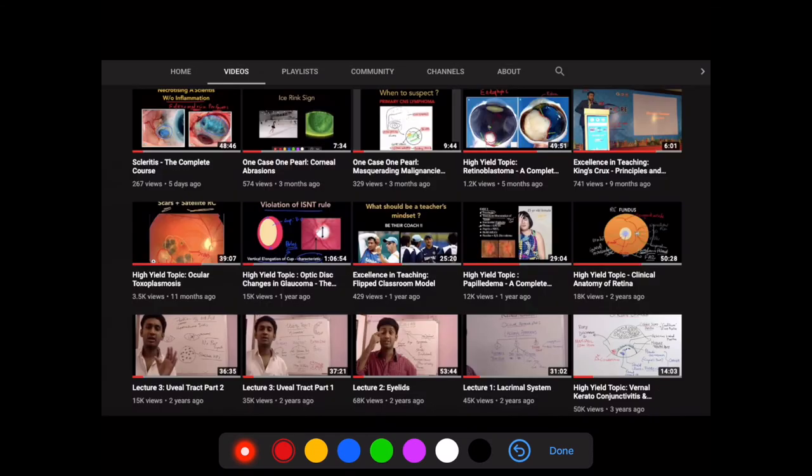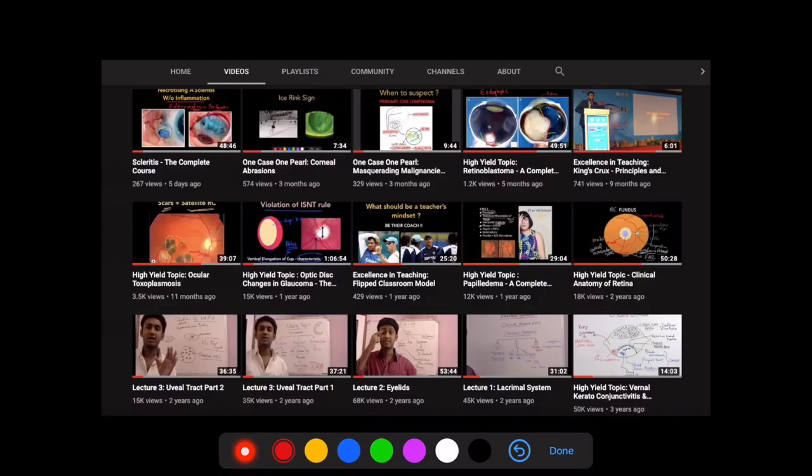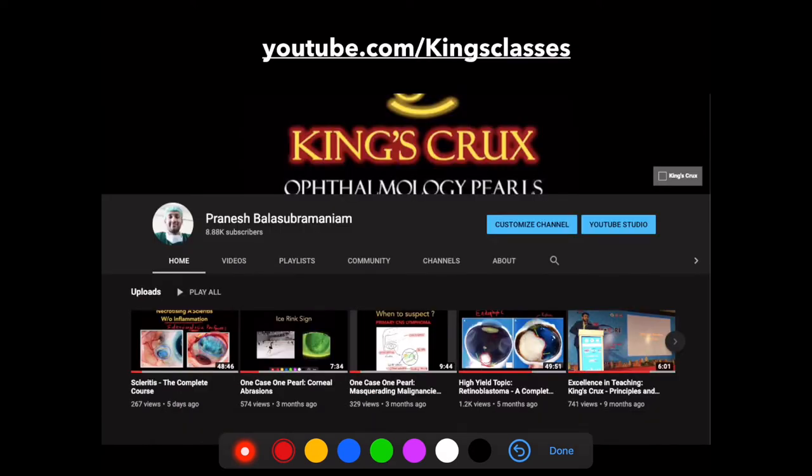What I did was start a YouTube channel and upload very simple video lectures, initially aimed at PG aspirants but slowly shifting focus to residents as well. This is the page, which I call King's Crux. Now it has around 8,000 subscribers at the time of this recording. Have I achieved success? No. But am I on the path? Yes.